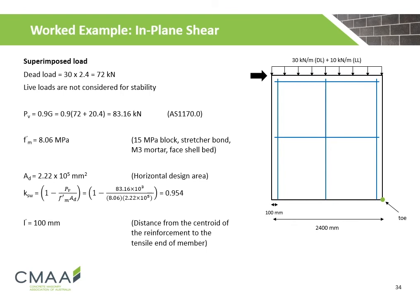We will now calculate the superimposed load acting at the top of the wall. For a 2.4 m long wall, the dead load is calculated to be 72 kN. Live loads are not considered for stability. The applied vertical load Pv considers both the superimposed dead load and weight of the wall and grout, calculated to be 83.16 kN. The characteristic compressive strength of the masonry is 8.06 MPa. The design area of steel is 2.22 × 10⁵ mm², which is the horizontal design area. The reduction factor for design overturning capacity Ksw is calculated to be 0.954. The distance L' from the centroid of the reinforcement to the tensile end of the member is calculated to be 100 mm.